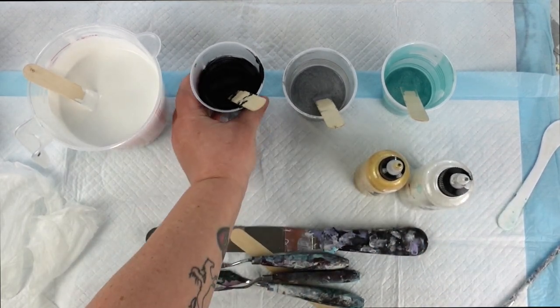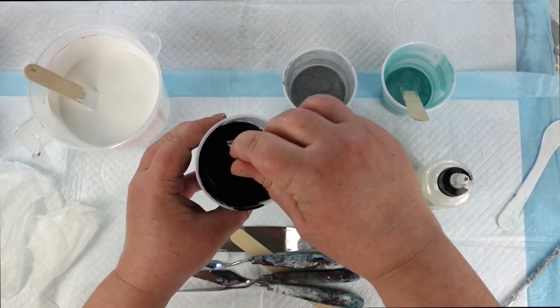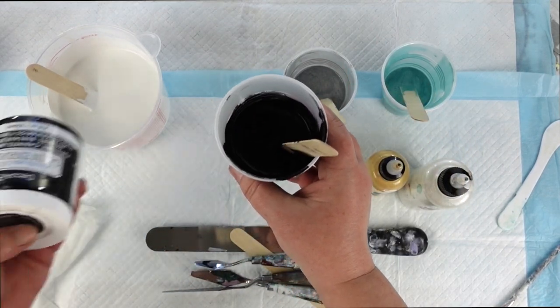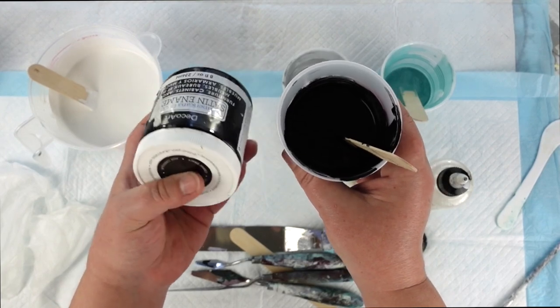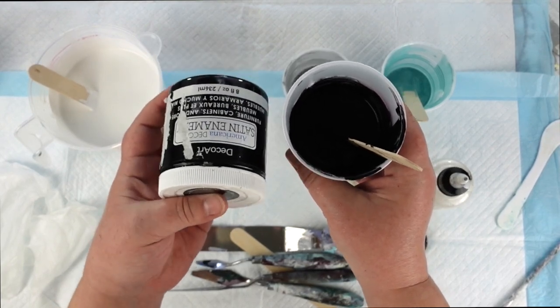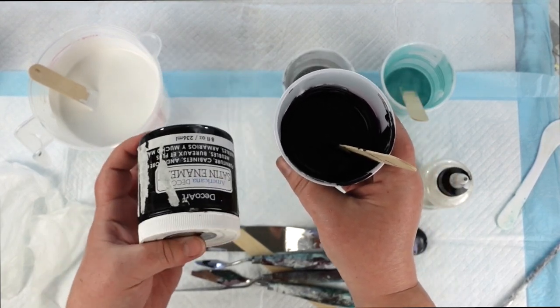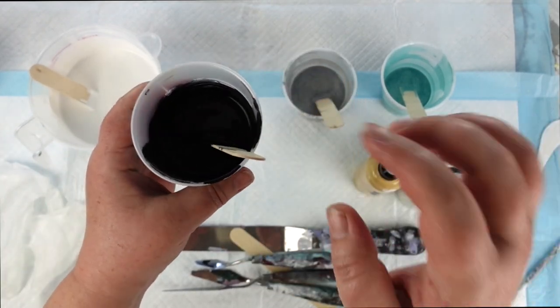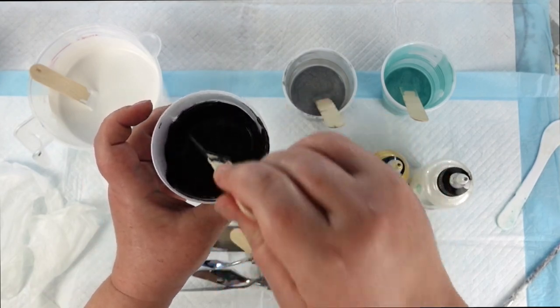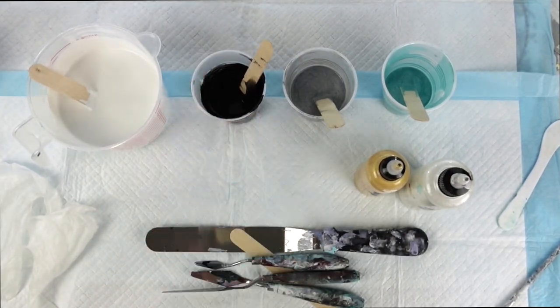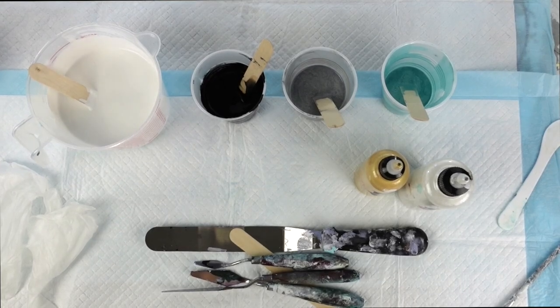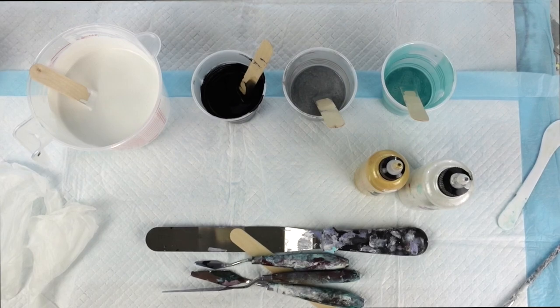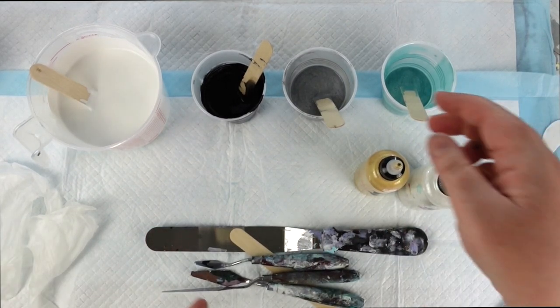And then here, this black is DecoArt Satin Enamel Black, so this is going to be my tree color today, or the base of it at least. It's going to be black, and I am using the DecoArt Satin Enamel because I know this paint will really stay strong and stay true. When it dries, you'll see the tree. All these other colors, as like highlights or shadows—or I guess it'll be mostly highlights—I'll be using other colors in there as well.